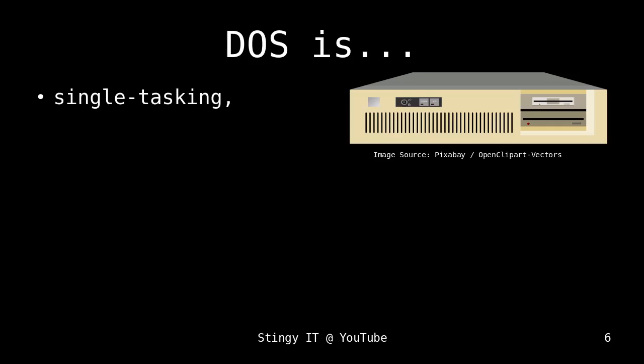First of all, DOS is single-tasking, which means you can only run one single program at a time. Even though you could argue there's some possibility of running something in the background, it's not a multitasking OS like we're used to today, where you can write an email, watch a YouTube video, and look at your task manager simultaneously. In DOS, you always have just one program open and you have to focus on that.